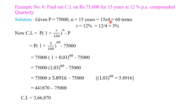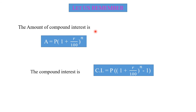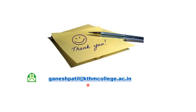Let us remember the formulas. The amount of compound interest is A equals P times (1 plus R/100) raised to N. The formula for compound interest is CI equals P times [(1 plus R/100) raised to N minus 1]. These are the two most important formulas. If you have any difficulty related to this topic, you can send an email to Ganesh Patil at redskatismcollege.ac.in. Thank you very much.